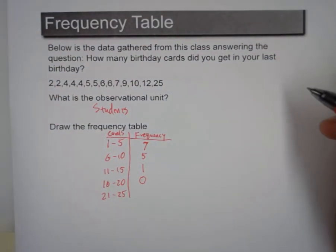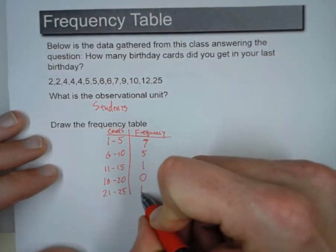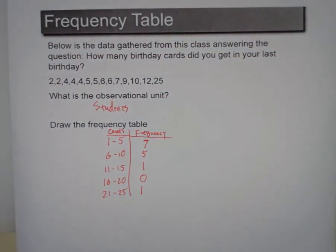If we left it blank, we say, well, we don't know. The data set is incomplete. The data set is not incomplete, it's just there's nothing there. And then finally, there's one number from 21 to 25. And so that's how we draw a frequency table given our data.